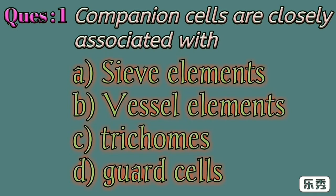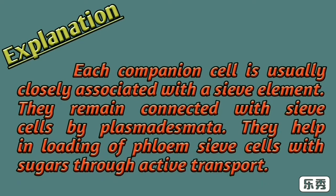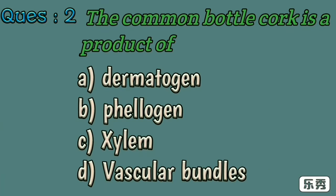First one. Companion cells are closely associated with: A) sieve elements, B) vessel elements, C) trichomes, D) guard cells. Here A, sieve elements, is the right answer. Each companion cell is usually closely associated with a sieve element. They remain connected with sieve cells by plasmodesmata. They help in loading of phloem sieve cells with sugars through active transport.